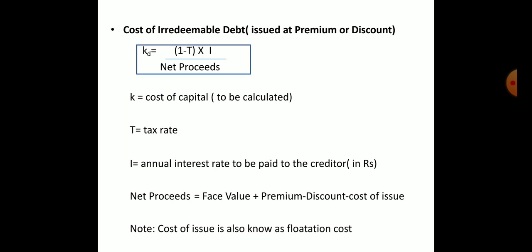For cost of debt issued at premium or discount, we use net proceeds instead of face value. Net proceeds = face value + premium (or − discount) − cost of issue. The cost of issue, such as advertisement or printing material, is also known as flotation cost.